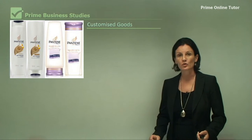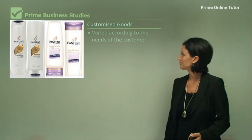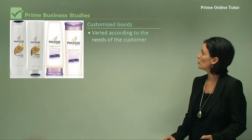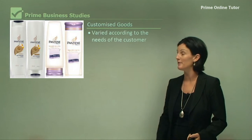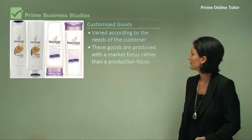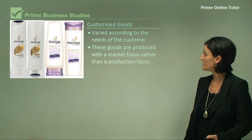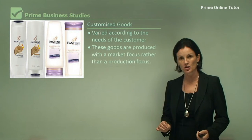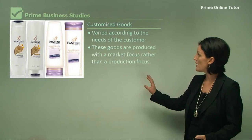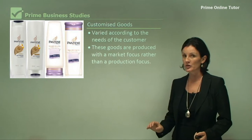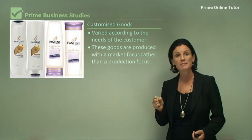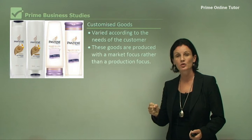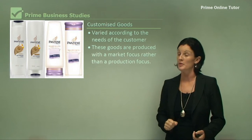Customised goods are completely different. They are varied according to the needs of the consumer. These goods are produced with a market focus rather than a production focus. When we speak of market we are talking about people, so these types of goods focus in on the consumer.